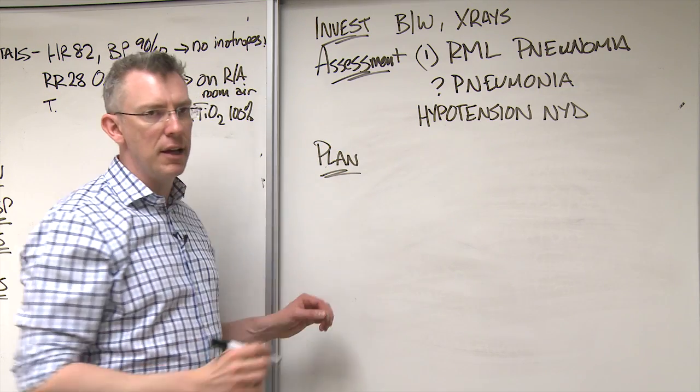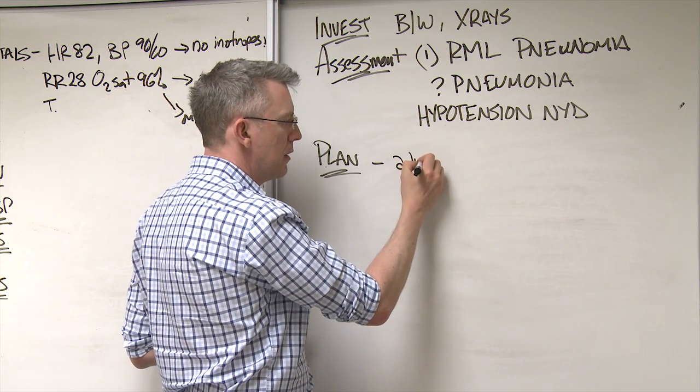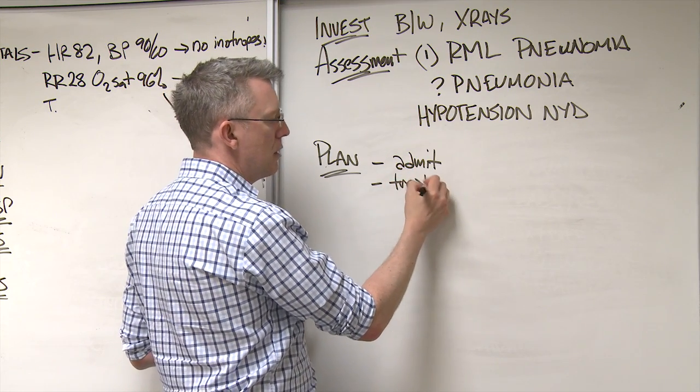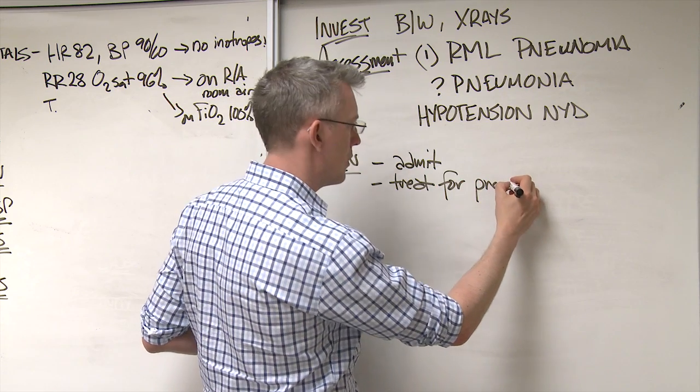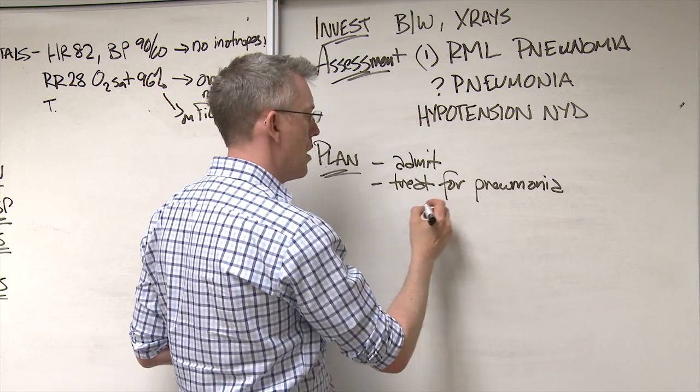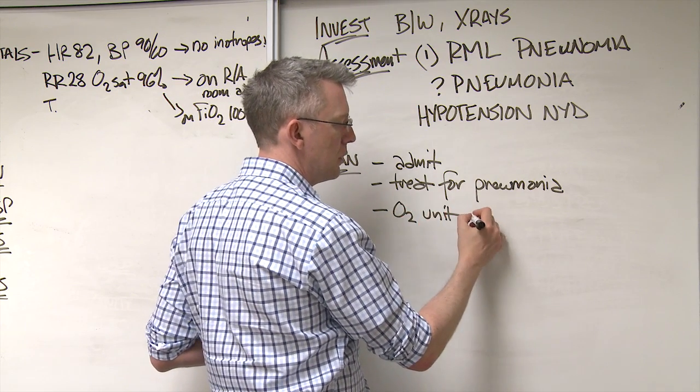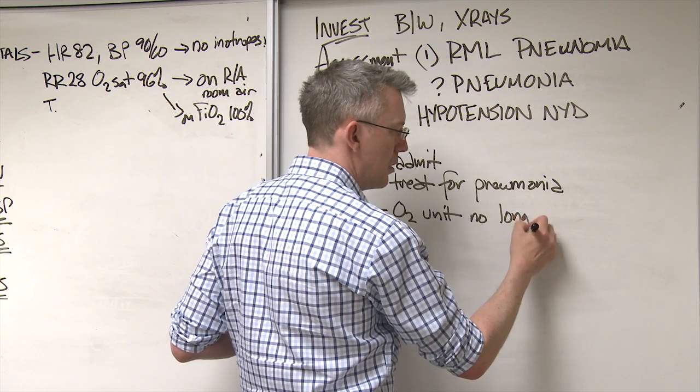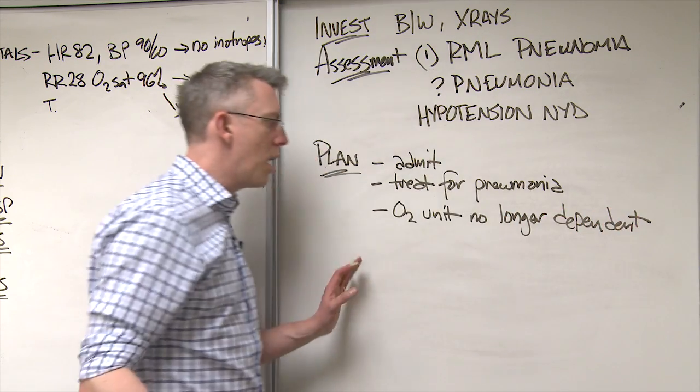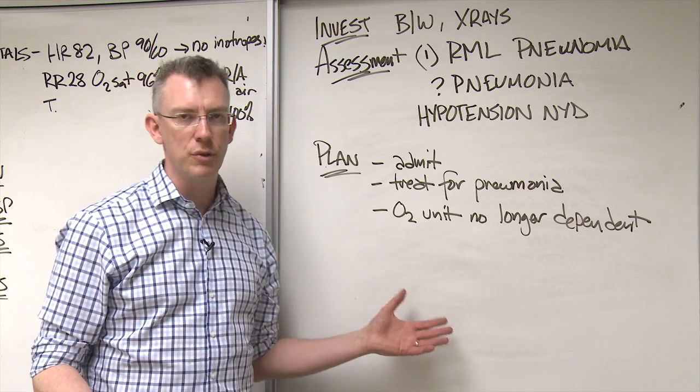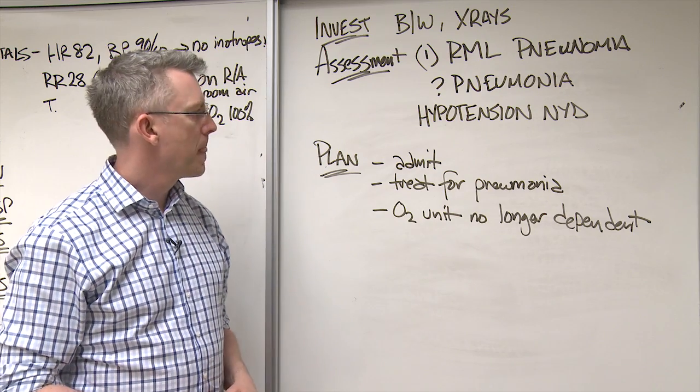And then your plan. Your plan here is not your detailed orders. This is just like you're going to admit, let's say you're going to treat for pneumonia, O2 until no longer dependent, because maybe this is a hypoxic child which is triggering the admission because their O2 sats are too low. And you sort of give the overall flavor of what's going on with this patient.